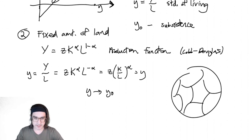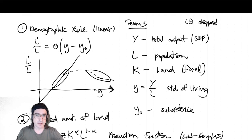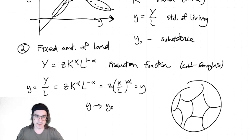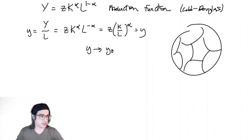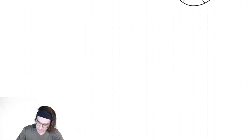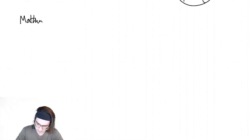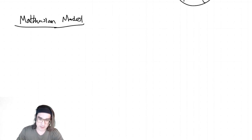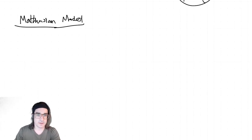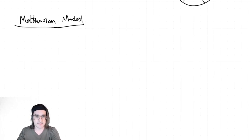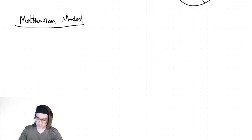Last time we were going through all this Malthusian stuff, thinking about production functions and things like that. Let me just sort of recap what we have. So the Malthusian model — I promised a more nuanced accounting of what the assumptions are and whether they're reasonable. We're going to get into that by the end of class. Let's go through the assumptions.